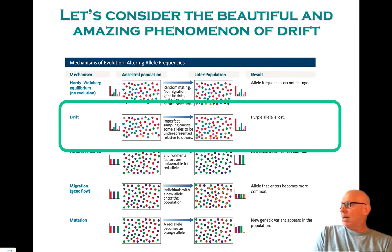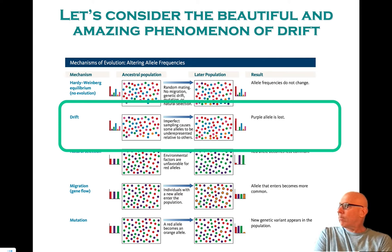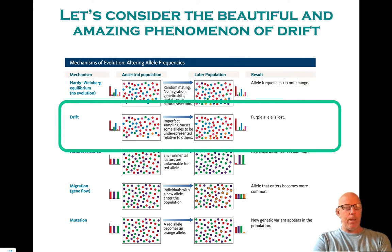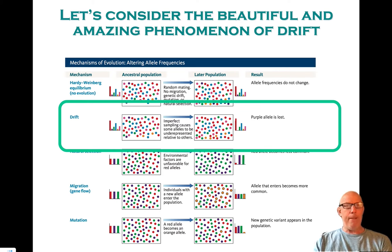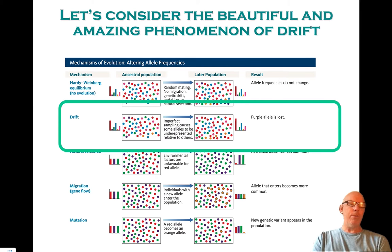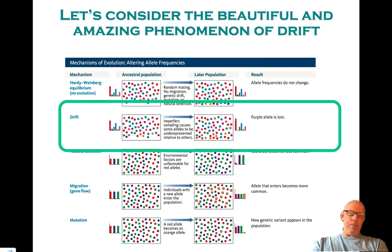Remember last time we talked about the Hardy-Weinberg equilibrium, and the idea there was that in an infinitely large population, if I have a certain fraction of alleles which are big A, that fraction will be unchanged over time as long as there are no interventions such as selection, which might favor the big A big A genotype.